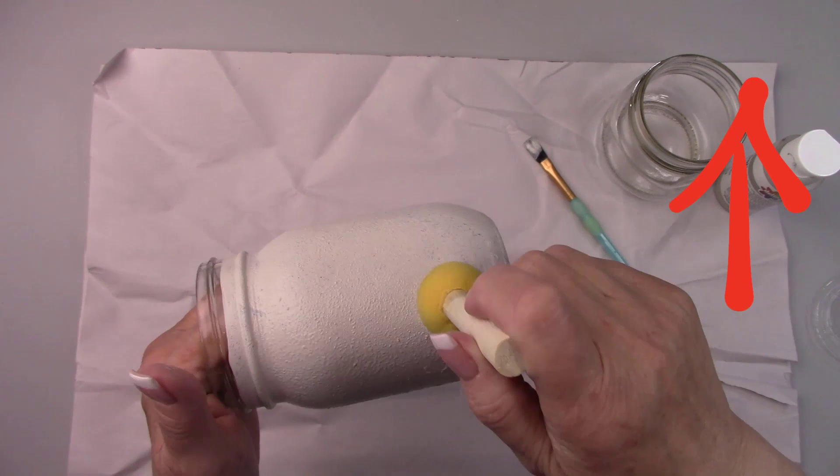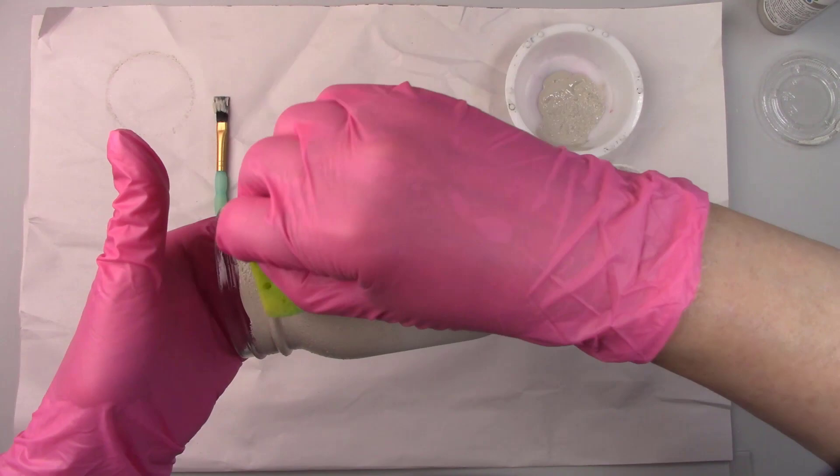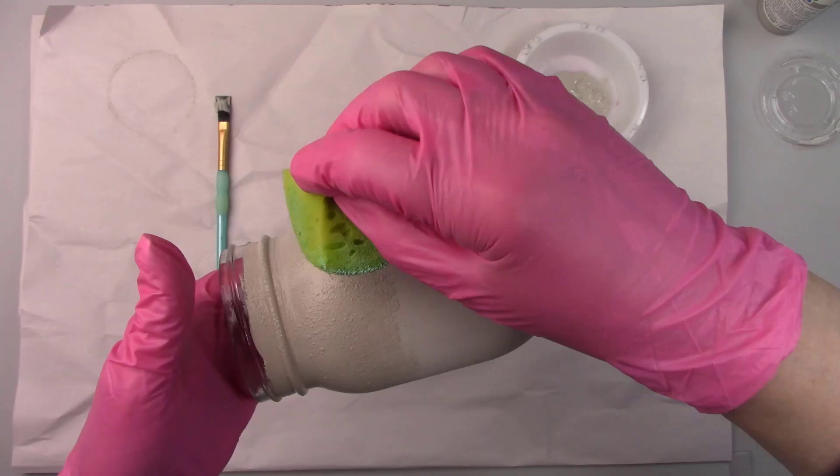After the sealer dried, I gave them another coat of paint. I'm giving this a vintage look by adding the darker color to the top and bottom of the jars. I'm using an ombre technique to blend the two colors together.